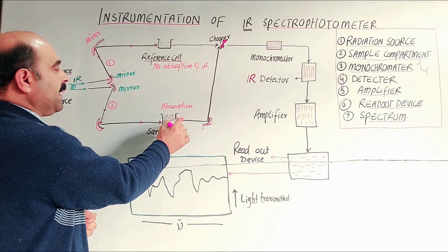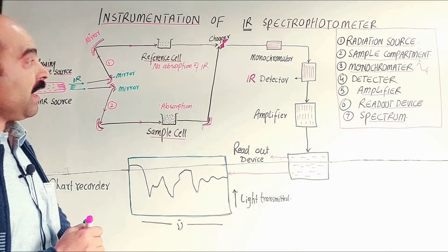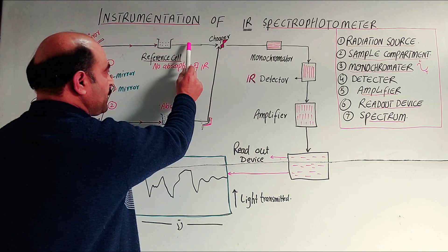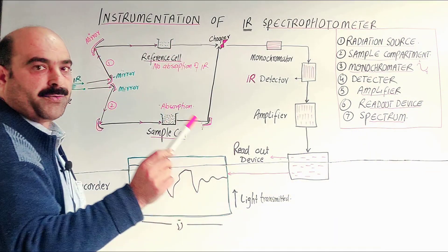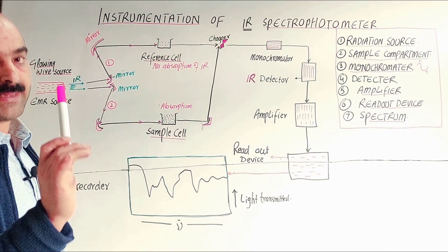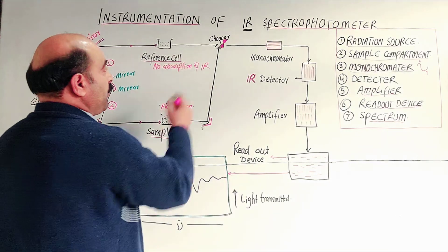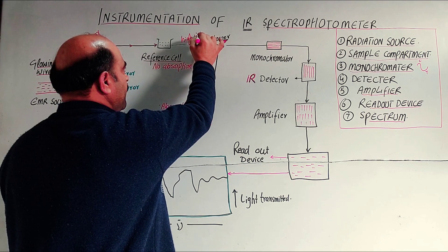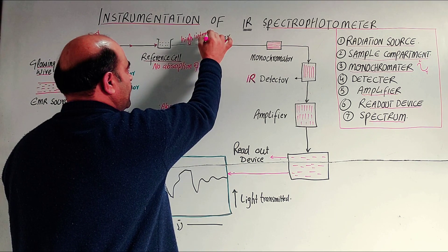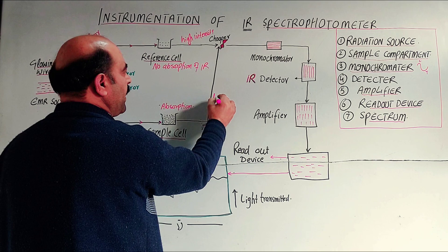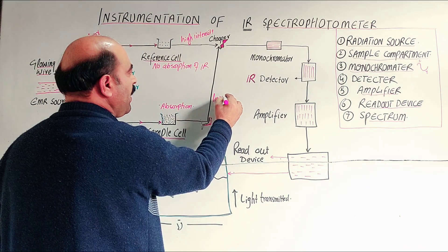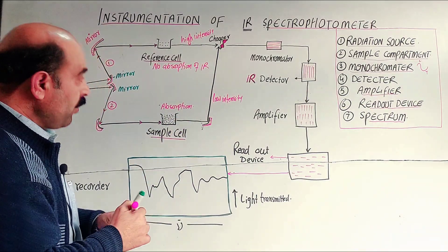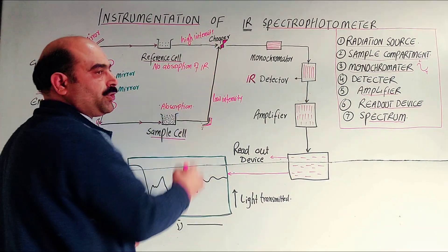Due to absorption, the intensity of IR radiation coming from the sample tube is less. But from the blank, the simple solvent, the intensity of IR radiation is high. So we have high intensity and low intensity due to absorption.